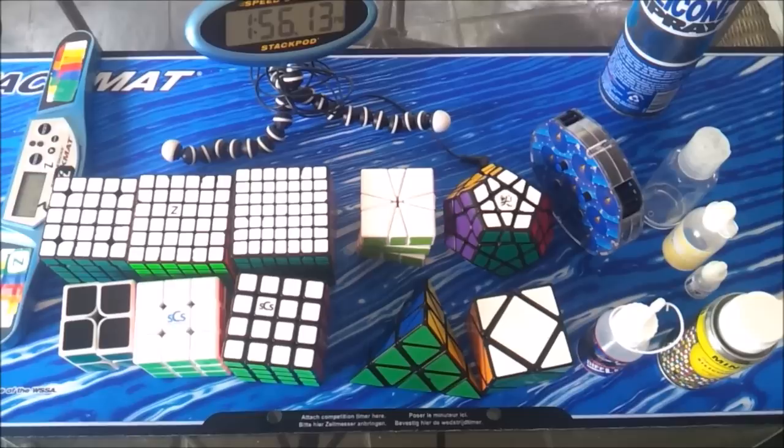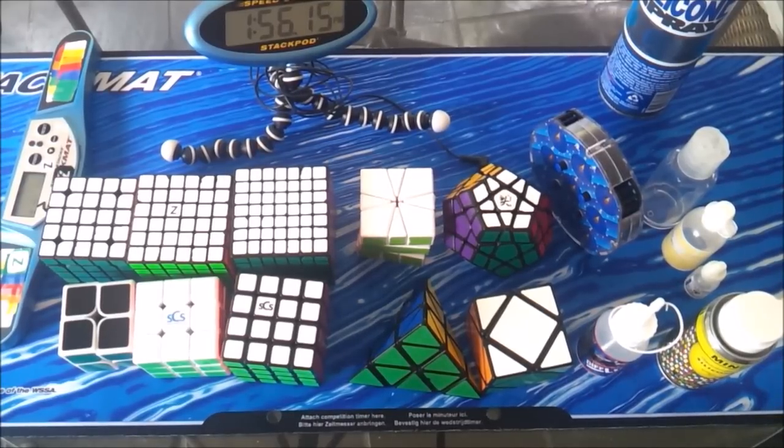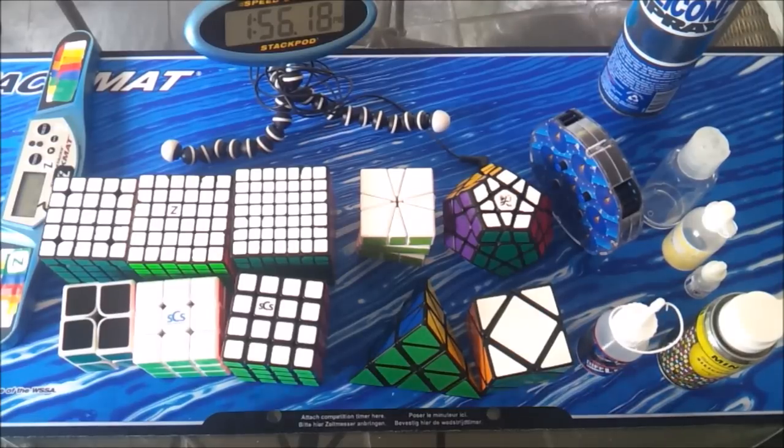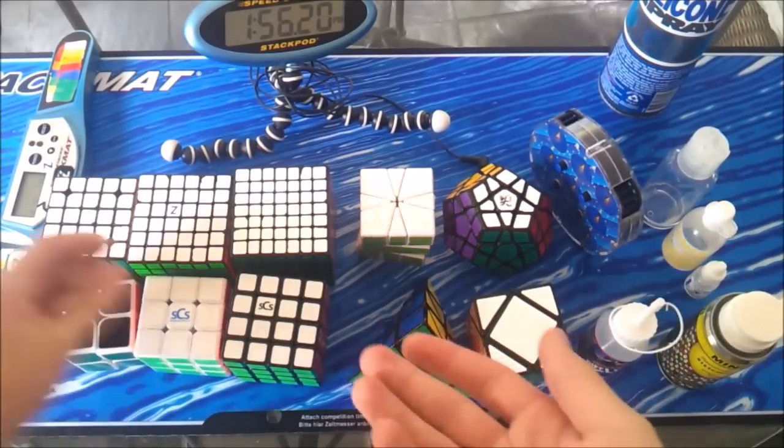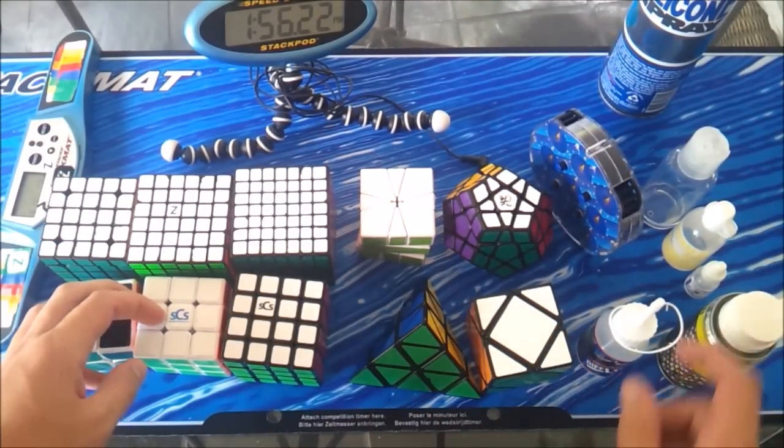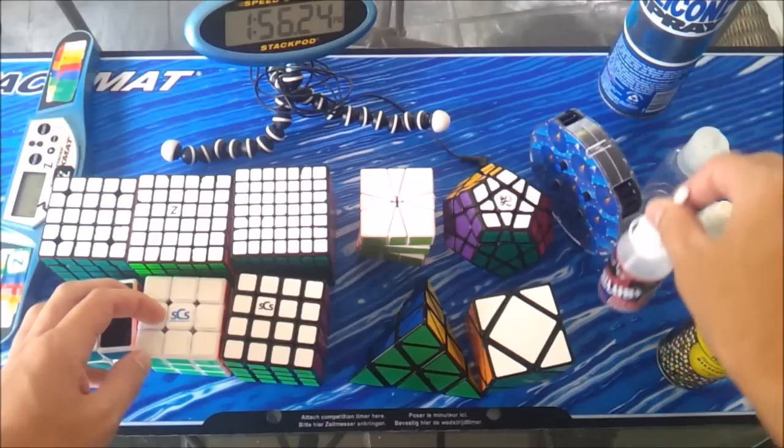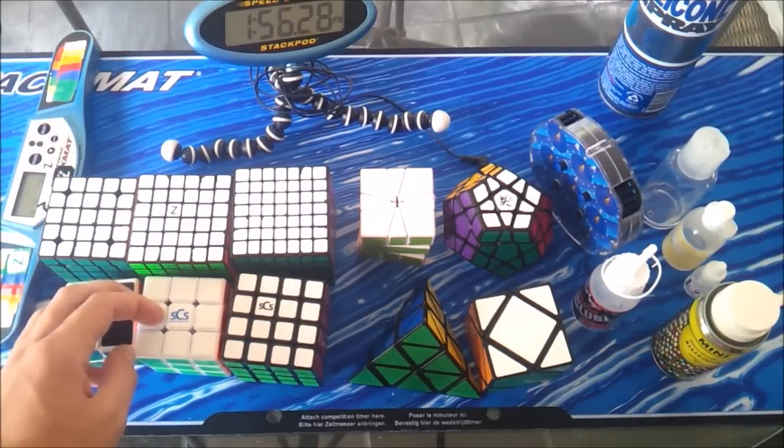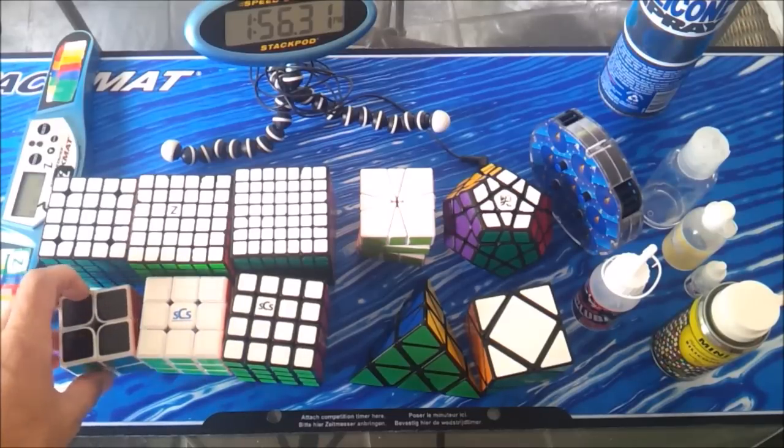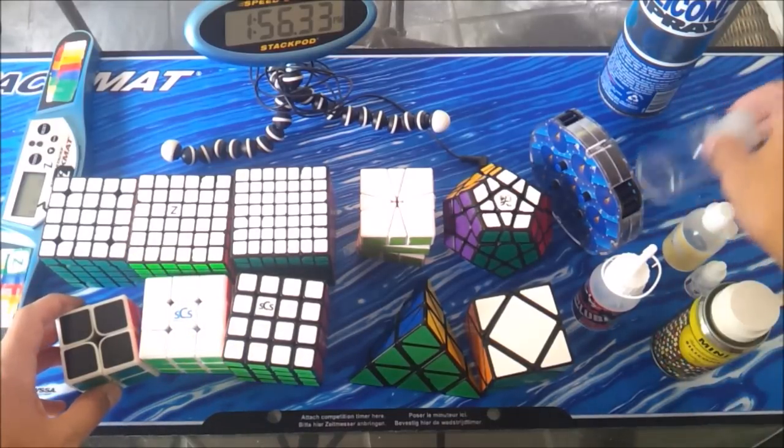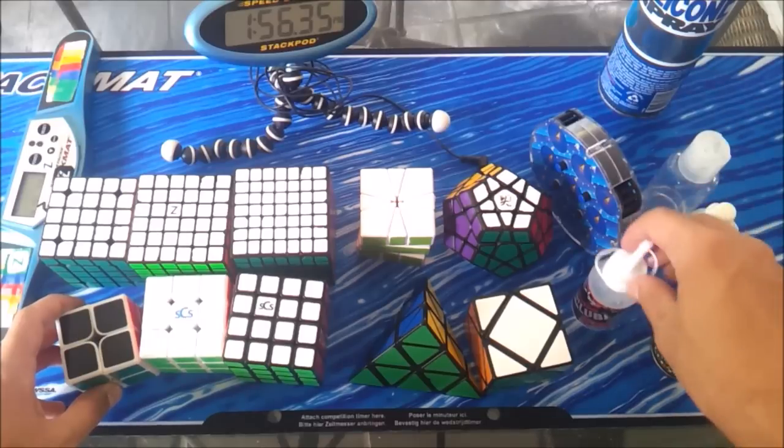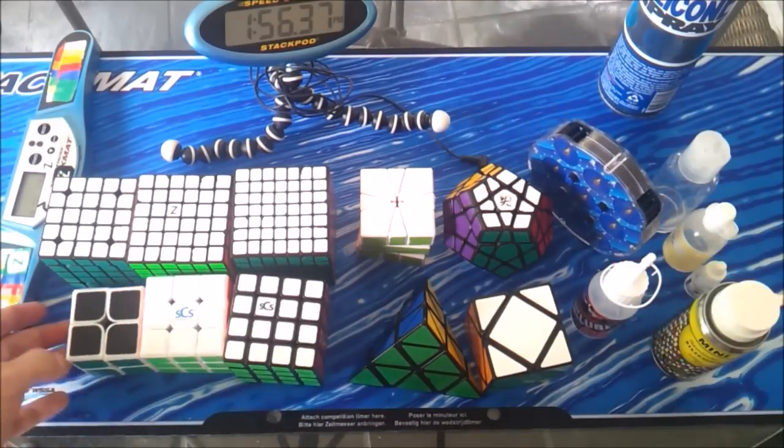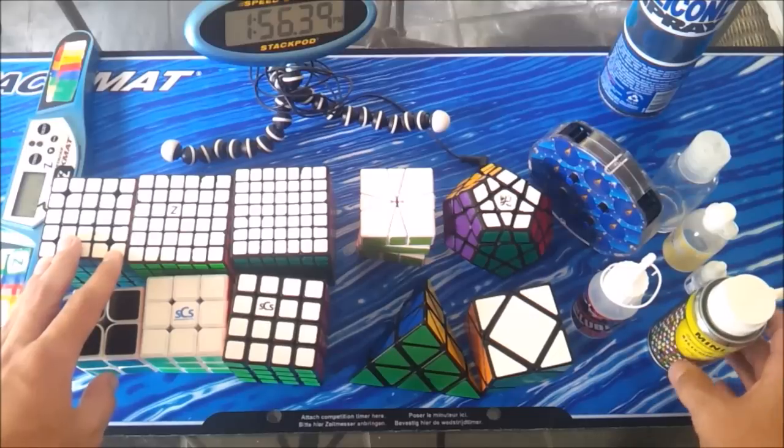So that's pretty much it, in terms of what cubes I use. Generally, in terms of lubricant, I just put whatever in whatever cube. This Traxxas stuff is good. This silicone stuff is good. It's all good. If you want a smoother feeling, maybe go with the Lubix or differential oil type stuff. If you want to speed something up, definitely go like a silicone spray.